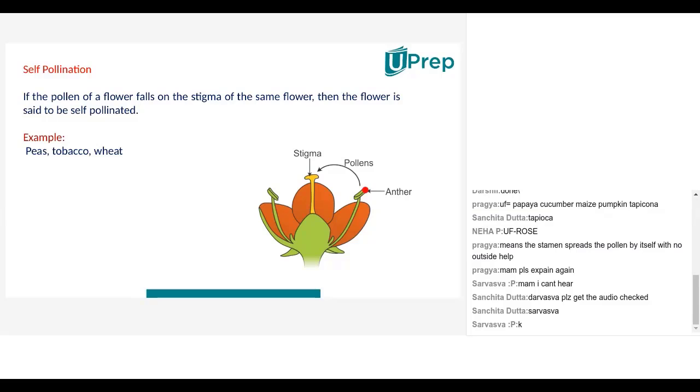All the yellow dust which shifts to the stigma can happen through, as I said, wind, it can happen through a honeybee. Honeybee was sitting here and then it decided sitting here. Its legs and wings were all covered with this pollen and it got shifted here. So self-pollination happened.